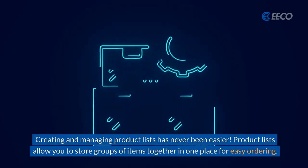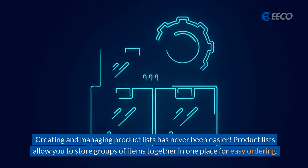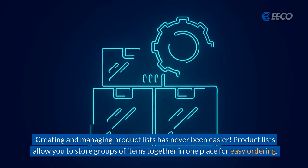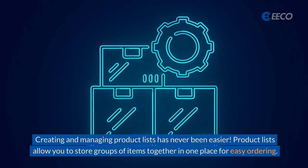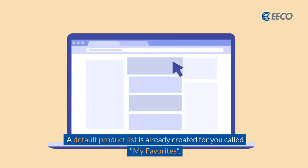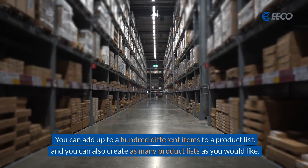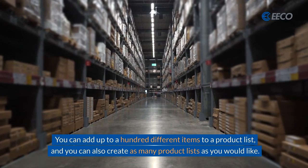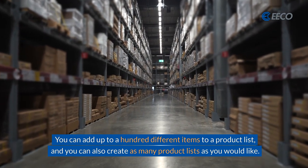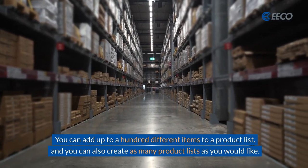Creating and managing product lists has never been easier. Product lists allow you to store groups of items together in one place for easy ordering. A default product list is already created for you called My Favorites. You can add up to a hundred different items to a product list, and you can also create as many product lists as you would like.